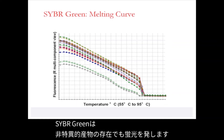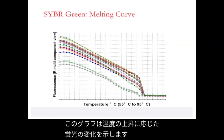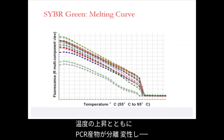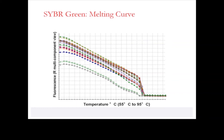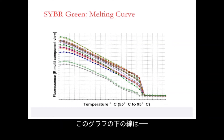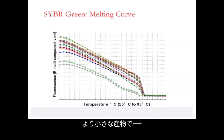SYBR Green 1 will fluoresce in the presence of non-specific products. In this graph, we observe the change in fluorescence as temperature increases. As temperature increases, the PCR product will separate, denature, and SYBR Green 1 will drop off. The lower line in this graph shows a product which denatures at a lower temperature, indicating a smaller product which is double-stranded and consists of primer dimers.